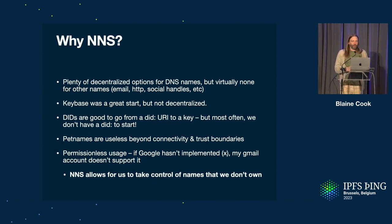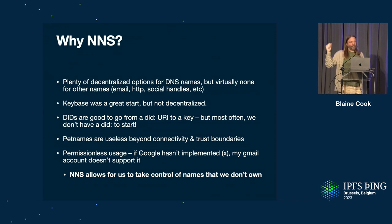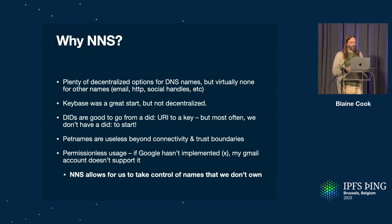Why am I working on this? Fission kind of needs this — DNS link mostly works, but I think there's a lot of opportunity in exploring what other things we can enable. Email, HTTP URLs, and social handles are widely used and really important in how people use the internet. There are lots of ways to link DNS names to decentralized stuff, but very few or none that let you link email, HTTP, and social handles in a decentralized way. Keybase was a great start but wasn't decentralized. DIDs are great to go from the DID URI to a key, but most often we don't have the DID in the first place — we need to get the DID to get going. This hopefully helps bootstrap that process.